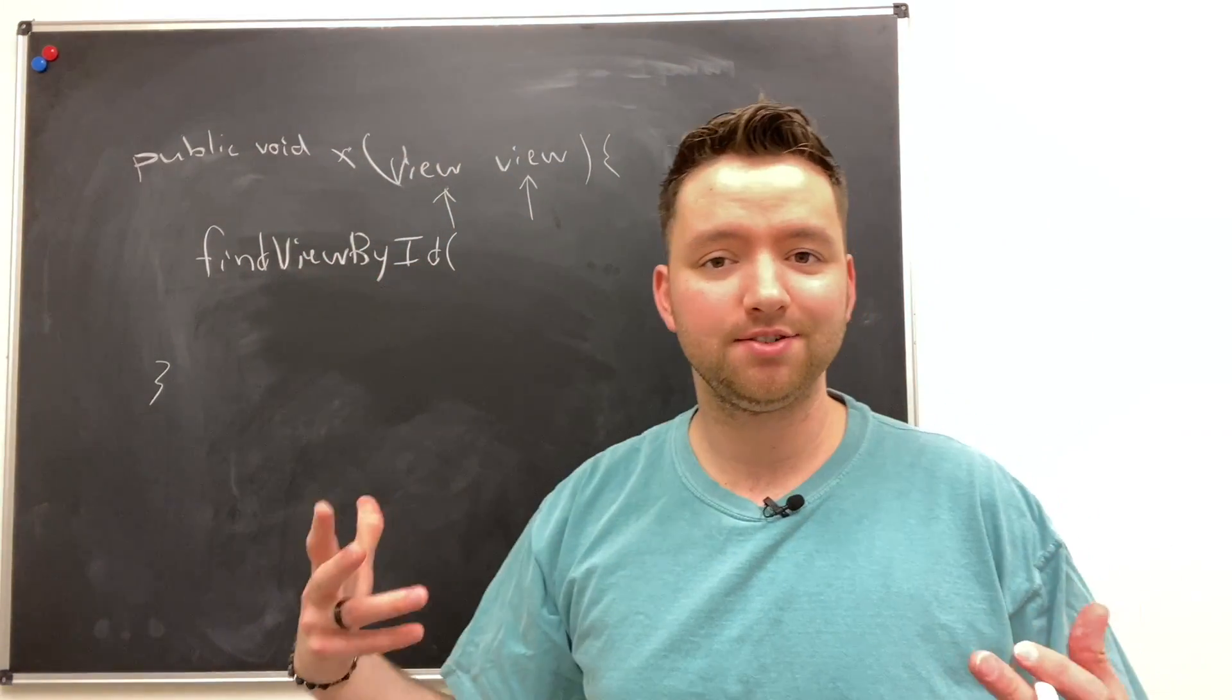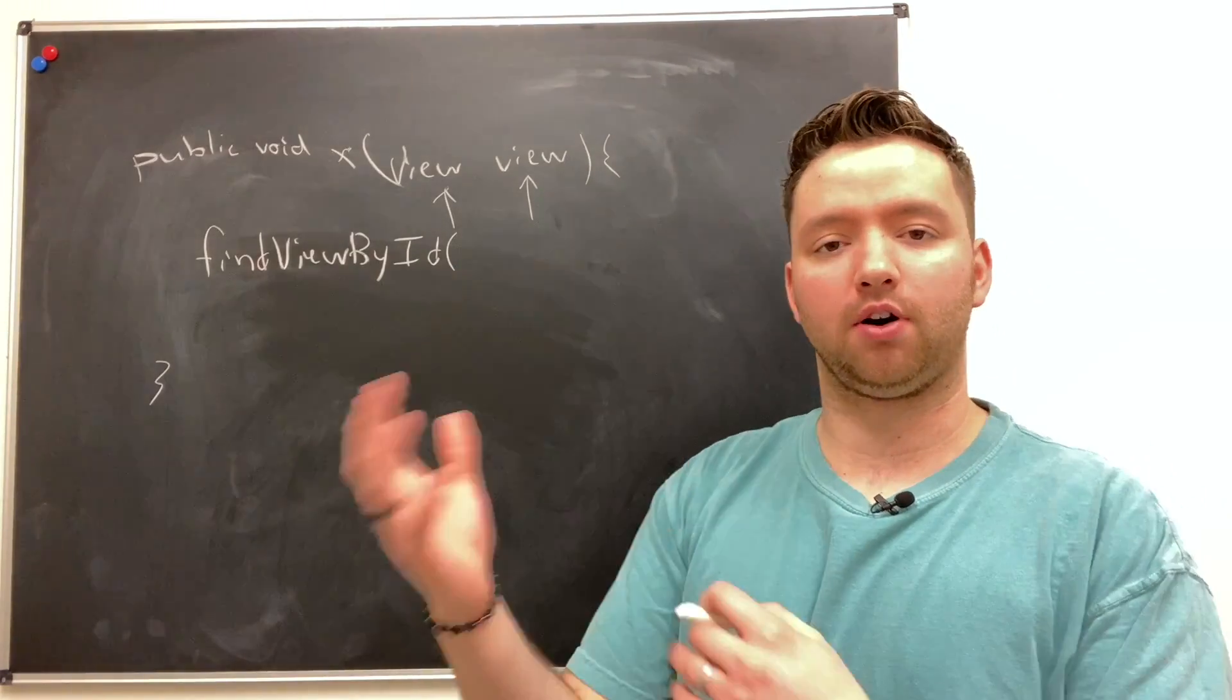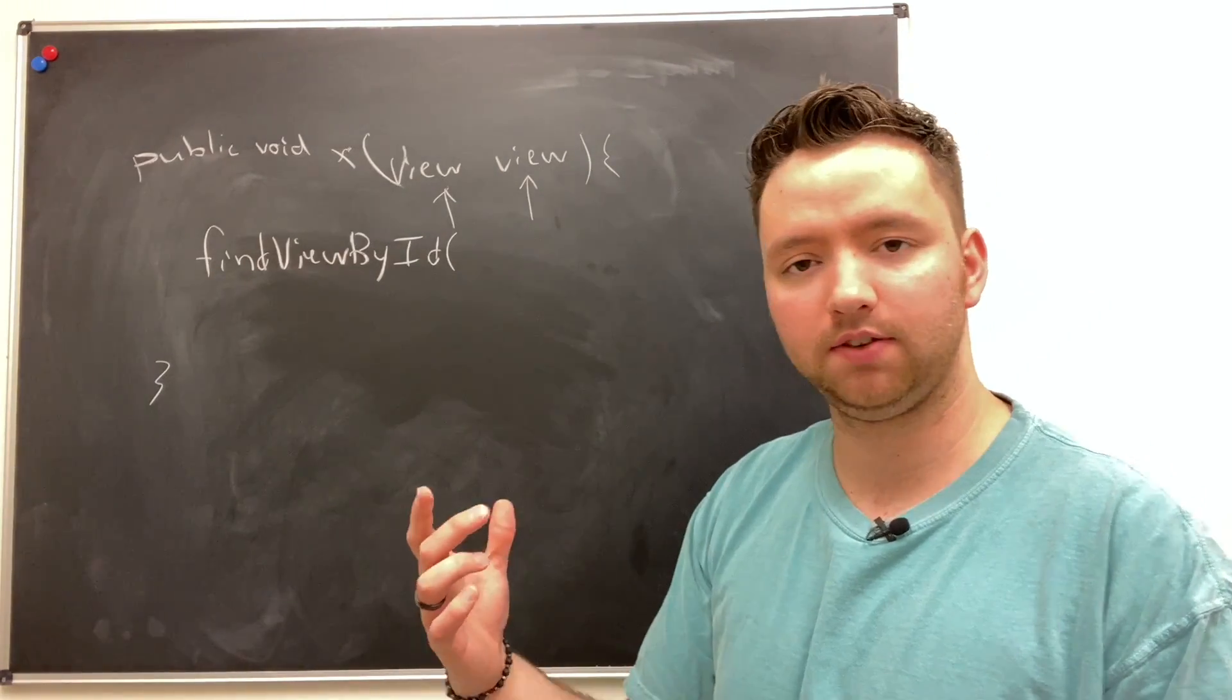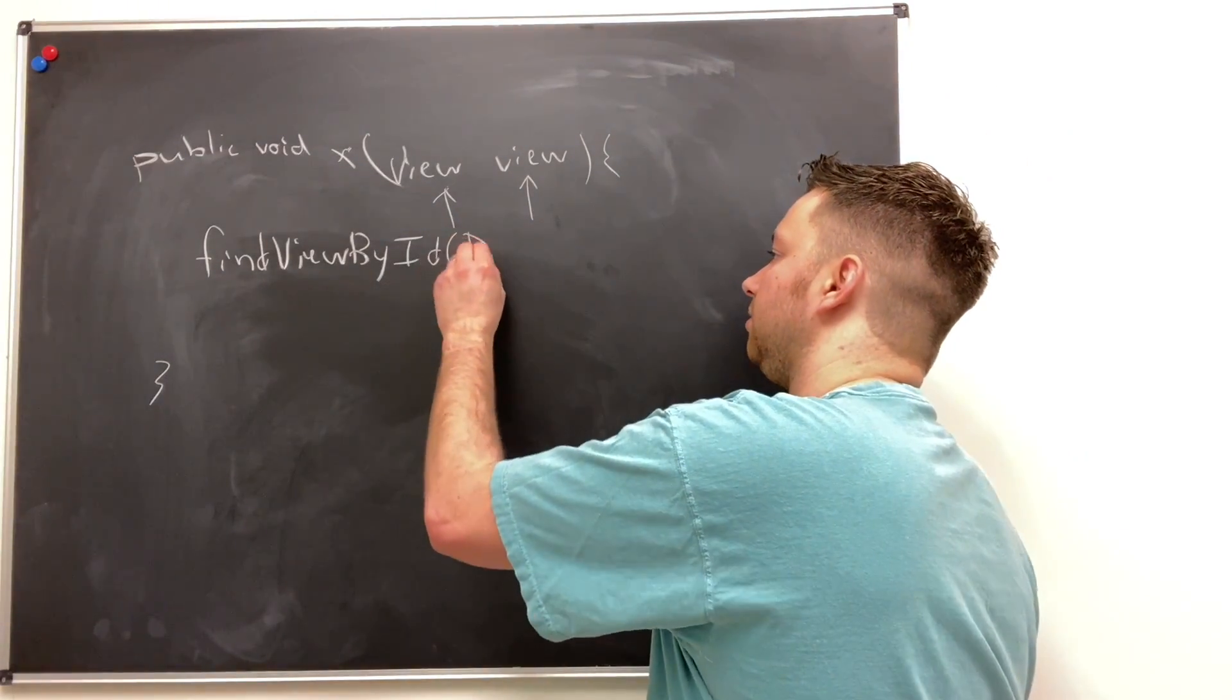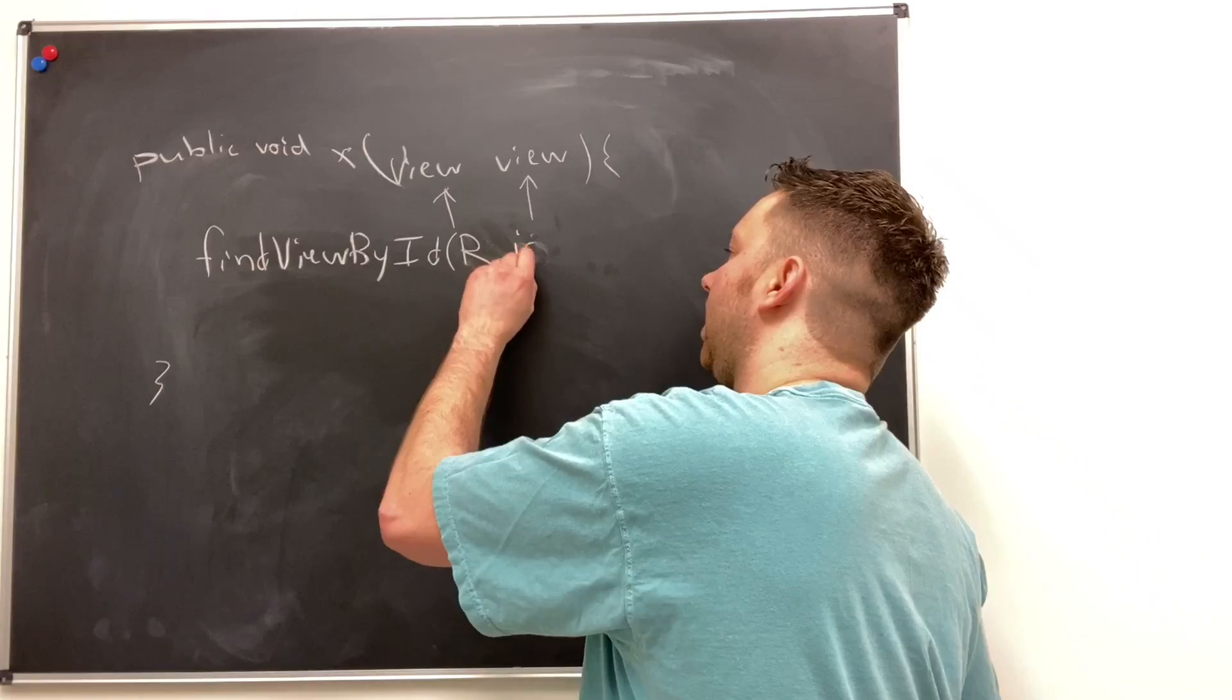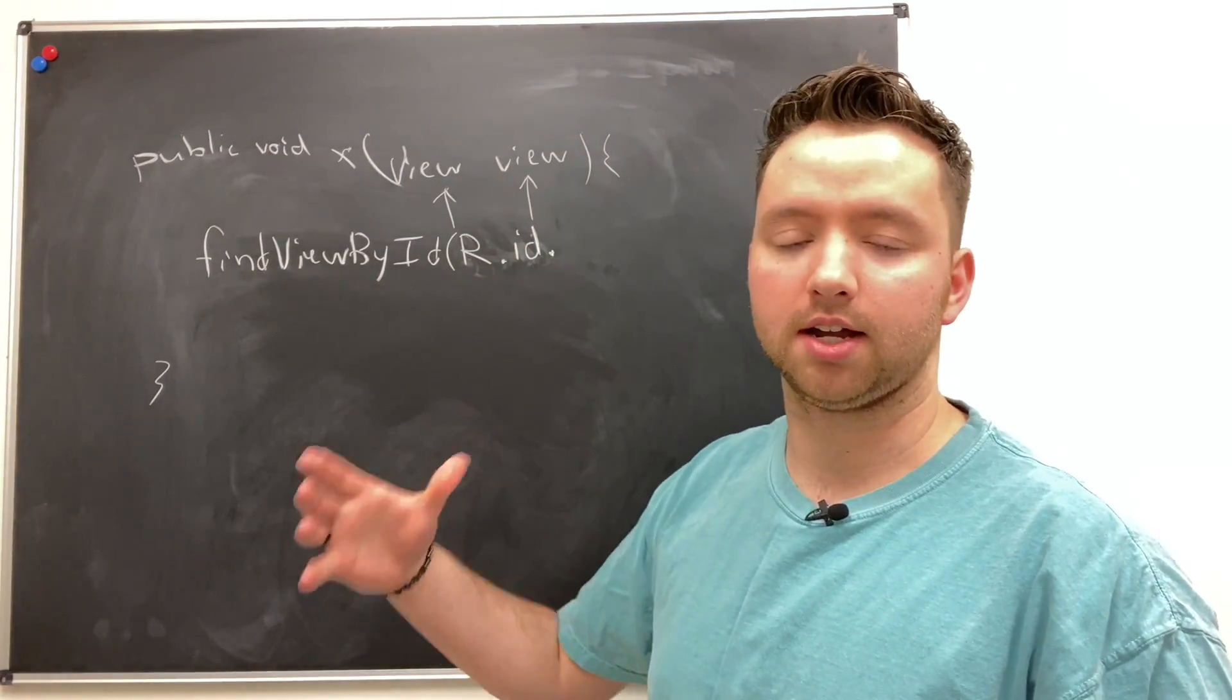Now this method takes an integer and we don't exactly have integers for the IDs of all of the different views we have on our activity, so we use this special class R and what we do is we say R dot ID dot and then the string name that we assigned to a particular view.